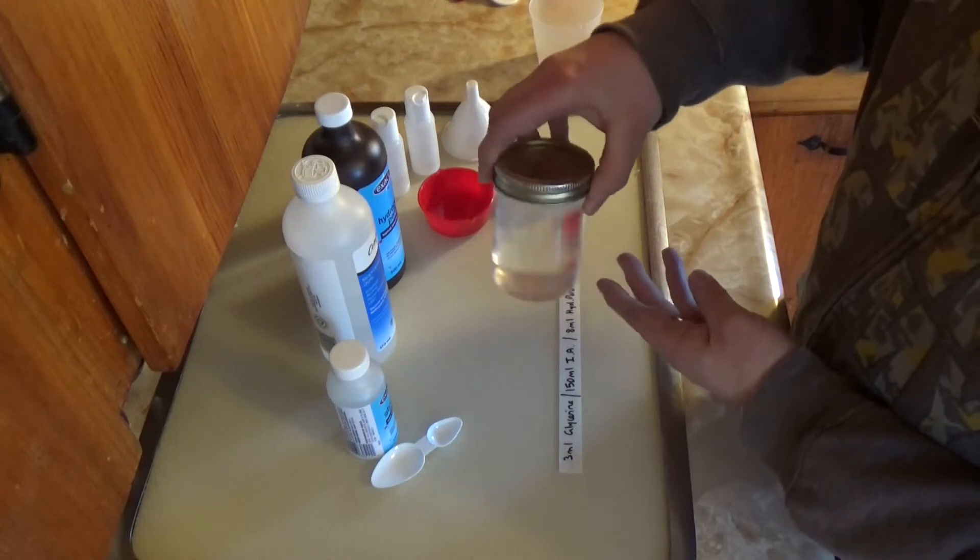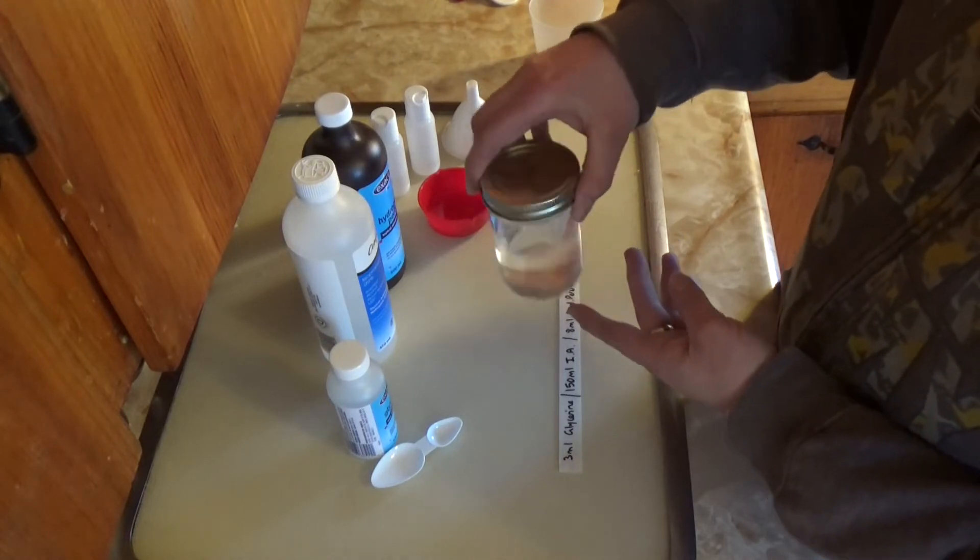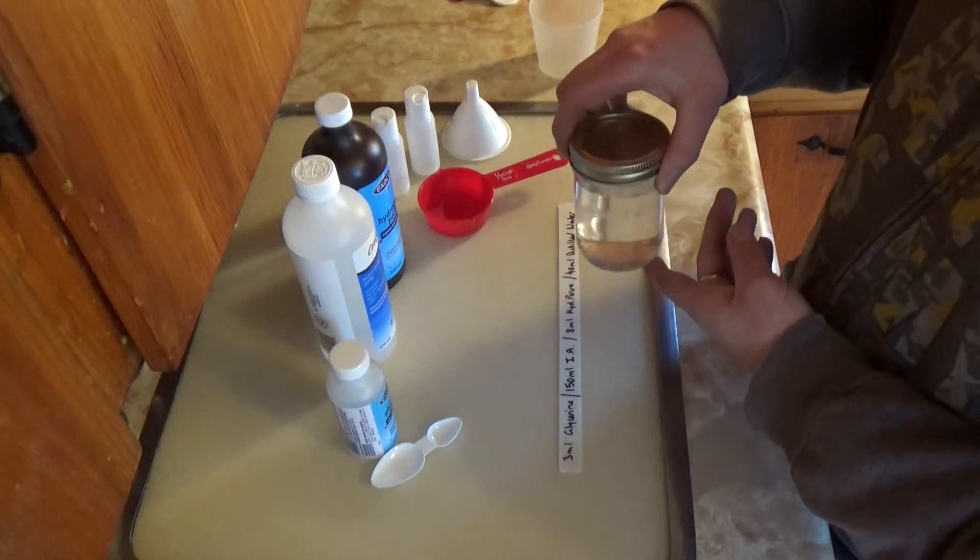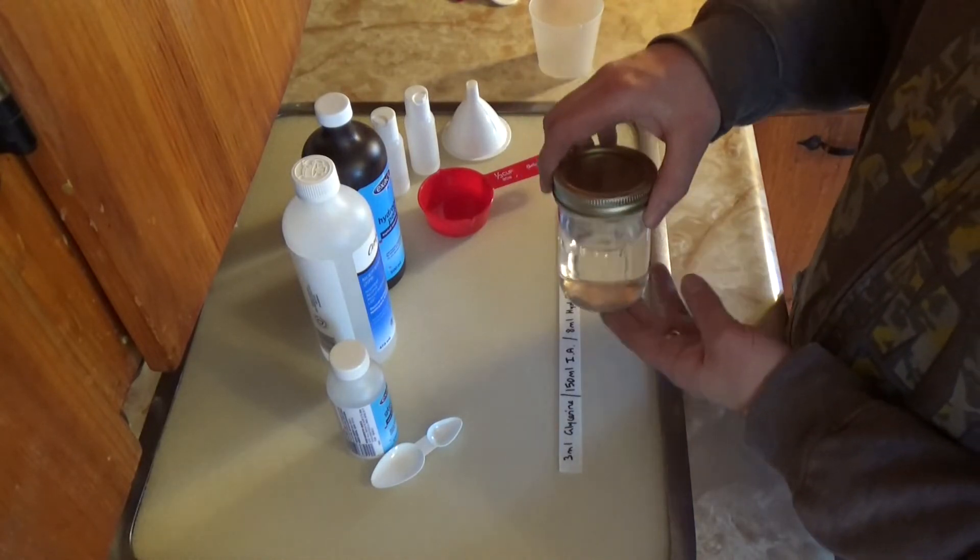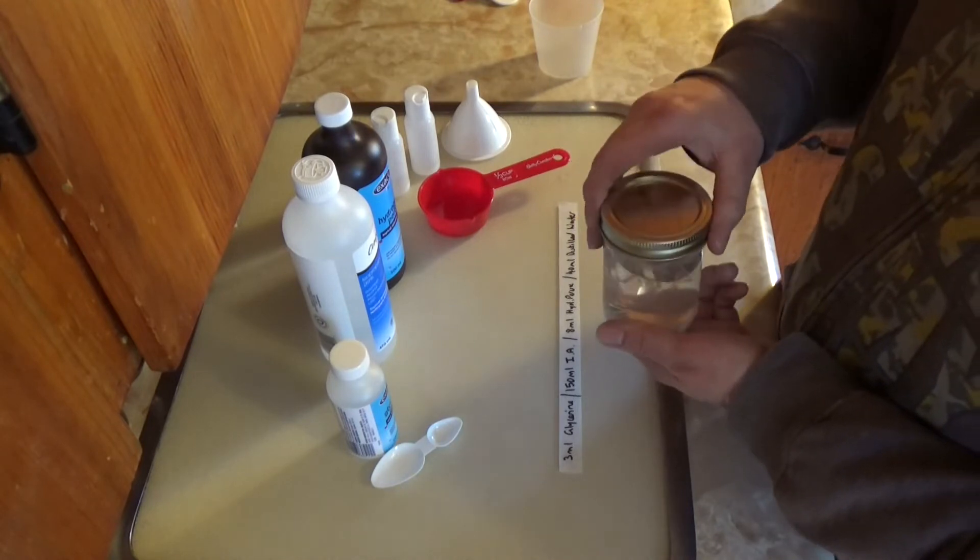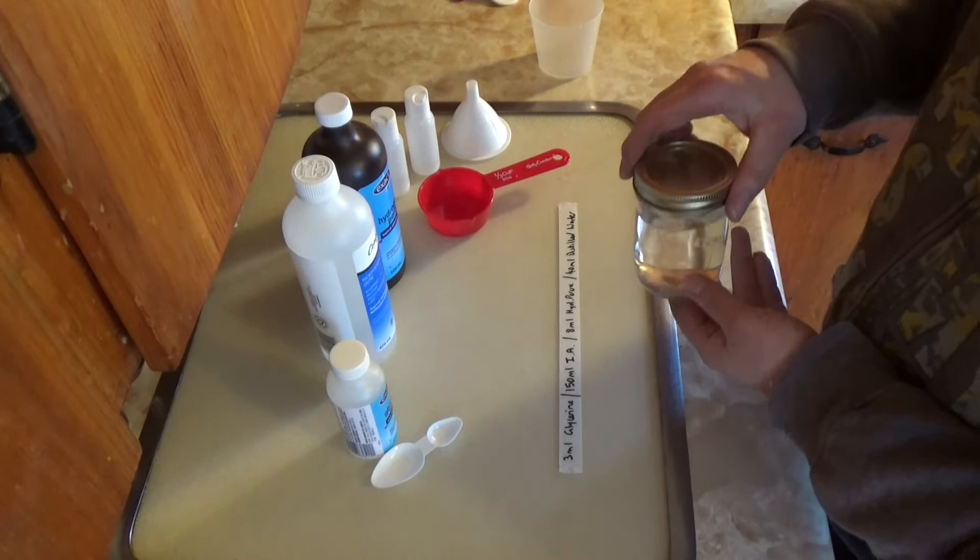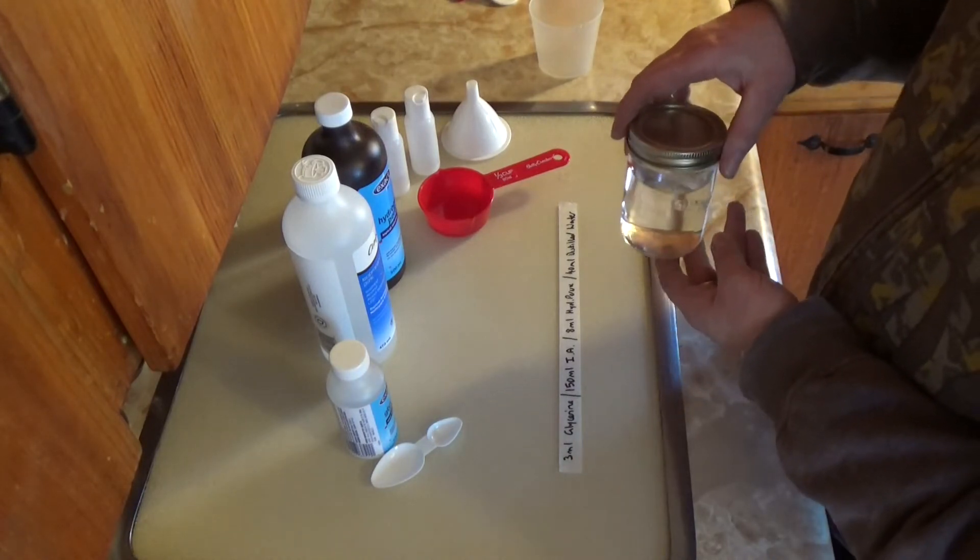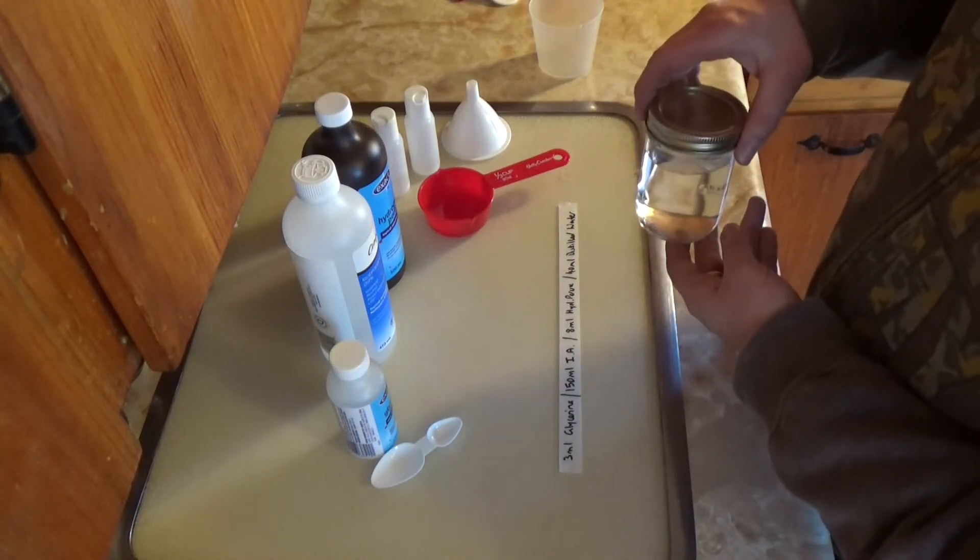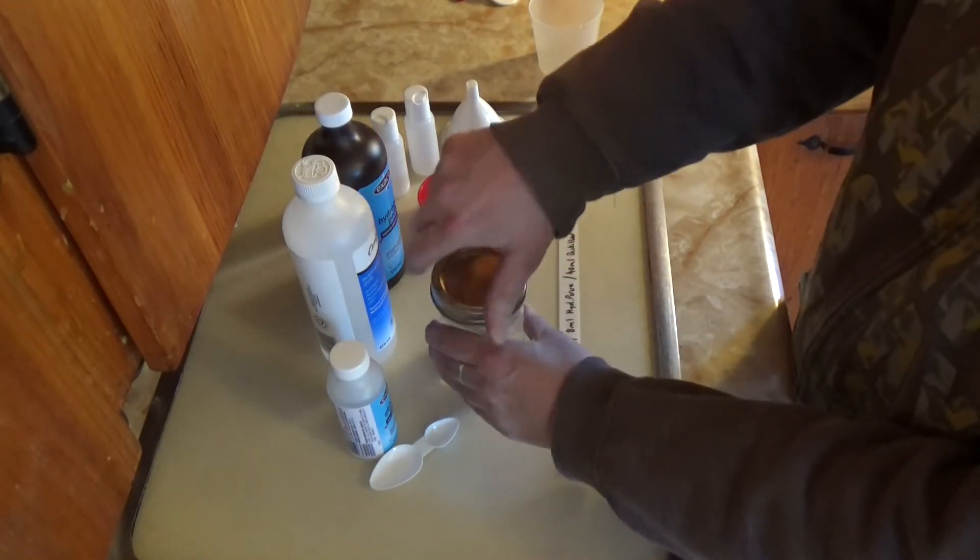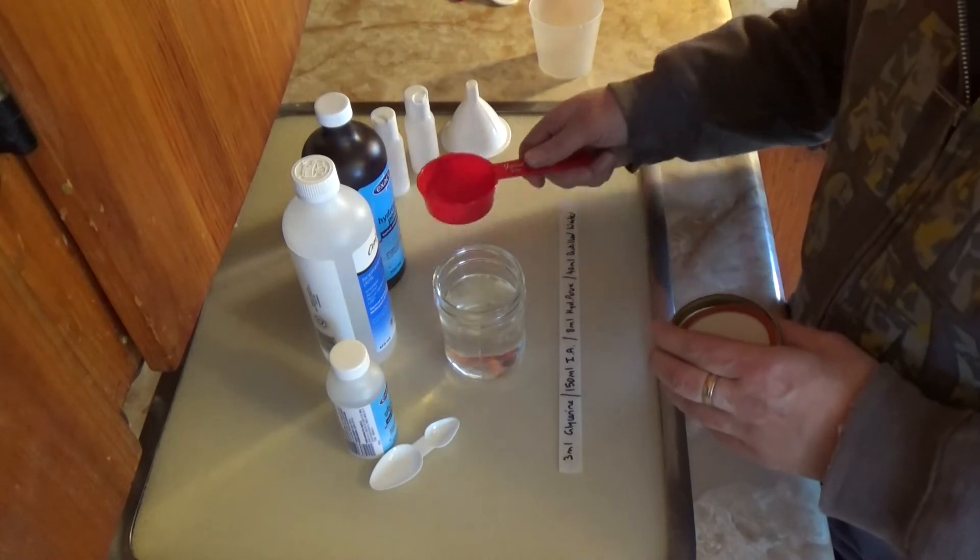So for this recipe we're making 200ml. I have 3ml of glycerin, 150ml of isopropyl alcohol—if you're going to use isopropyl alcohol, you've got to have more than 70% proof, preferably 99%—8ml of hydrogen peroxide, and 40ml of distilled water. Add the rest of the water.